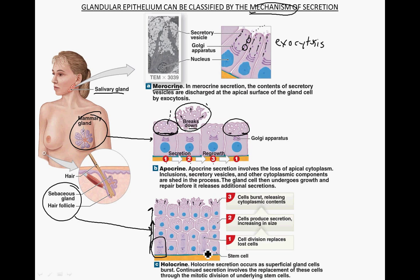You should be able to pause here and make a graphical organizer that compares and contrasts the similarities and differences between merocrine, apocrine, and holocrine glands, and also identify a different gland where each type takes place — for example, salivary glands for merocrine. It might be a good idea to pause now.